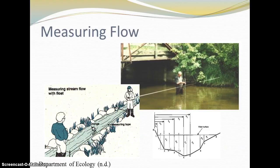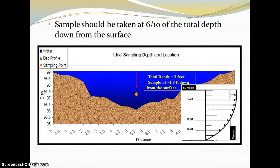Measuring flow requires good methods in order to ensure more accurate readings. The more sections of a river or stream you sample for flow, the greater accuracy in your results. Where you measure does make a difference. If you are not using a handheld meter to measure flow, you can use a float if you have a section of the river or stream at least 50 feet in length. As a general rule, a sample should be taken at 6-tenths of the total depth down from the surface. In the example here, the deepest point is 3 feet deep, and the sample is taken at 1.8 feet down from the surface.